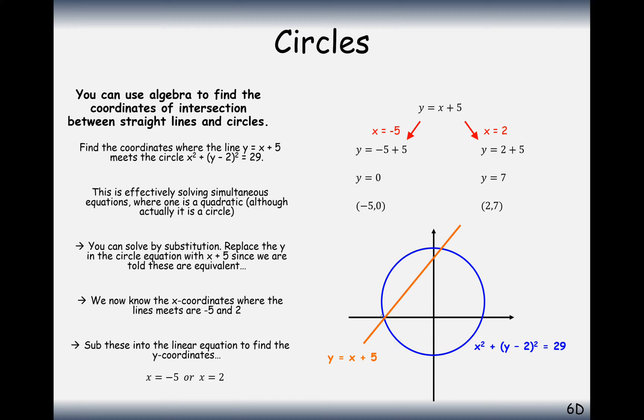And graphically, this is what it's going to look like. Intersection of x plus 5 with the equation of the circle, we'll go through at minus 5, 0, and 2, 7.